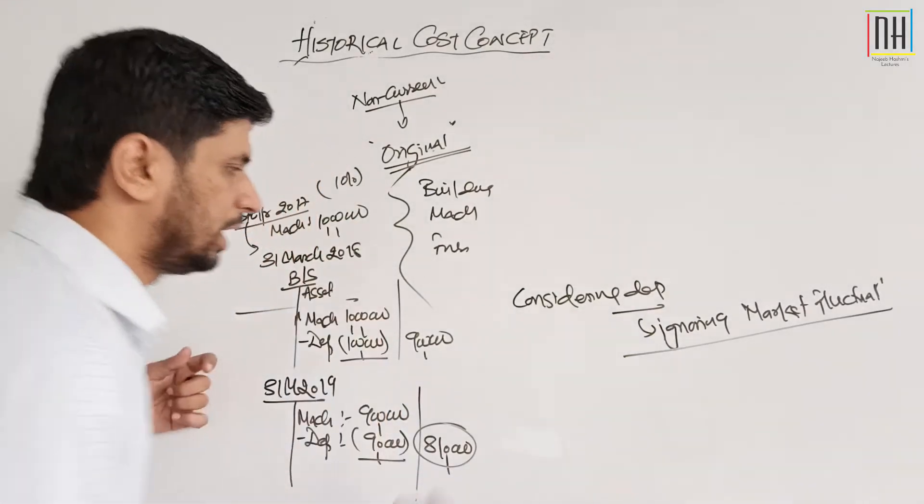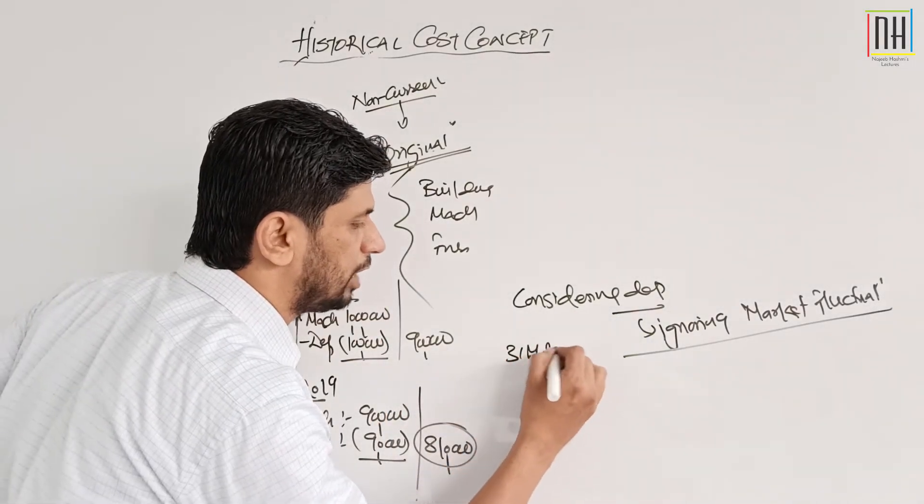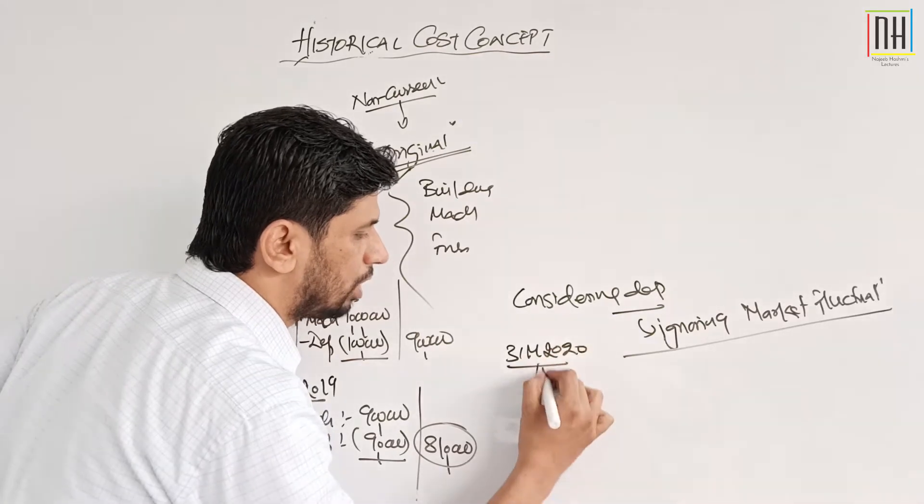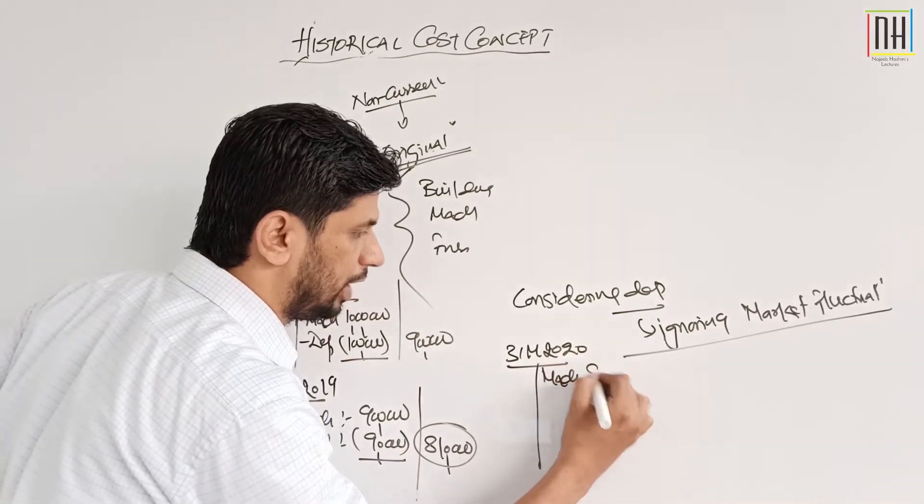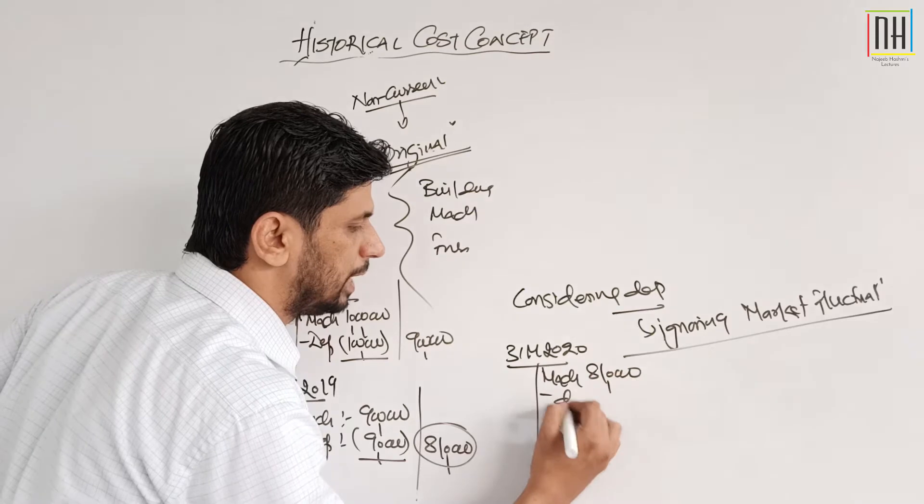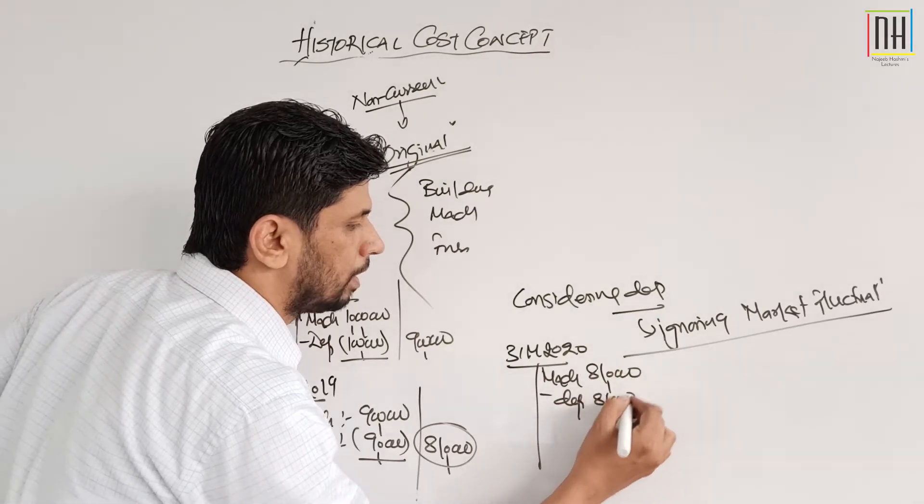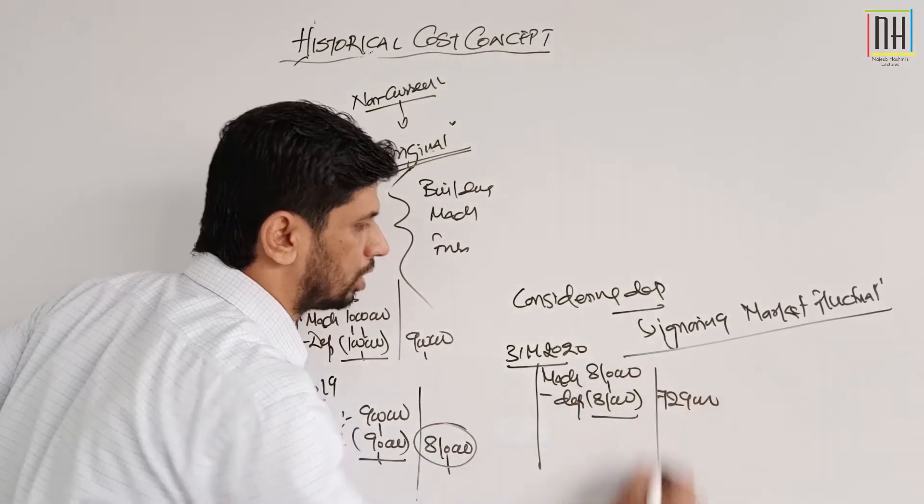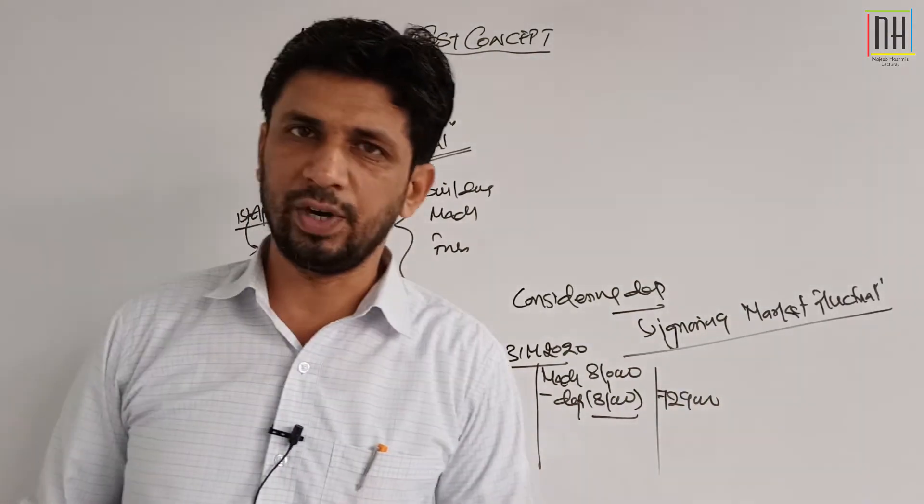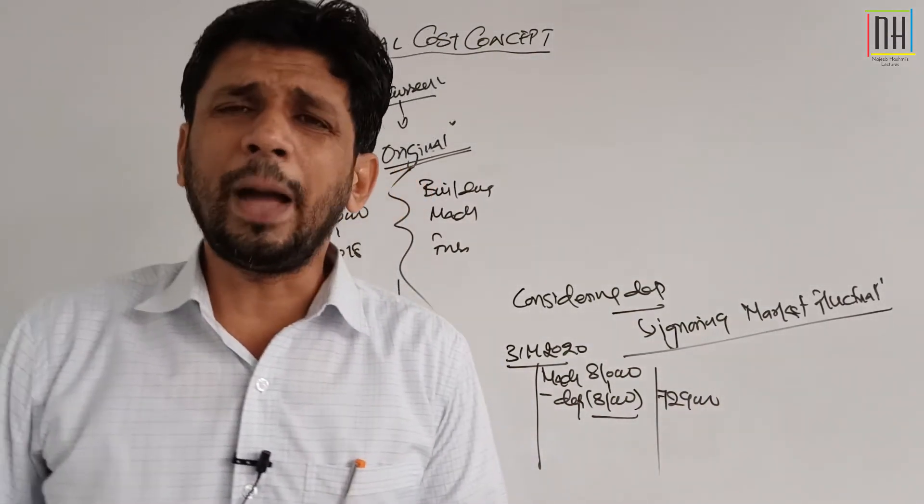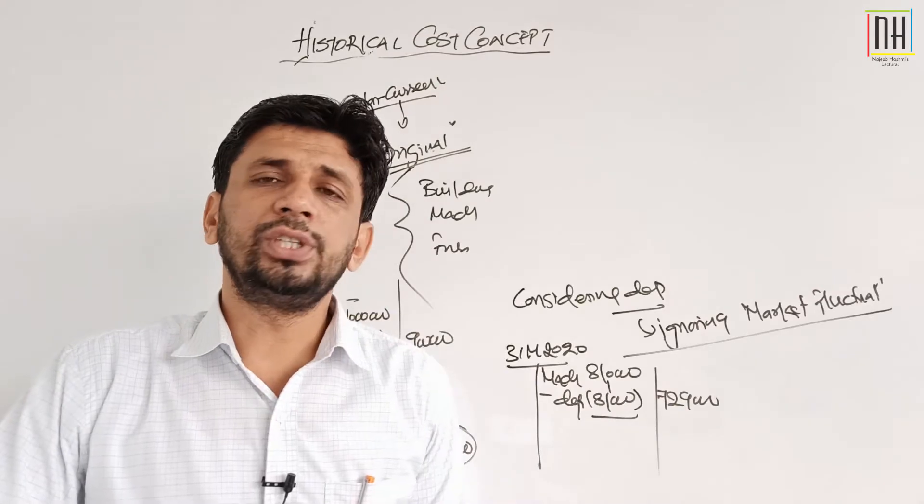On 31st March 2020, again you are going to prepare the balance sheet. Machinery ki value 8 lakh 10,000 thi, depreciation 81,000, and book value should be rupees 7 lakh 29,000. Aapko pata laga ki is machine ki aaj ki date mein market value kya hai.